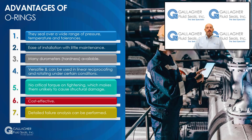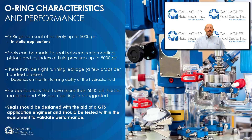Each type of failure leaves behind fingerprints for analysis. Gallagher engineers work with customers every day on properly specifying O-rings, and in the rare event of a failure, can work to help you better understand what can be done to correct the problem. Next, we will discuss O-ring characteristics and performance. Within the design and use of O-rings, there are some foundational statements appropriate to discuss. These statements are true most of the time; however, the consequences of a seal failure can be severe. Seals should be designed with the aid of a GFS application engineer and tested within the equipment to validate performance.